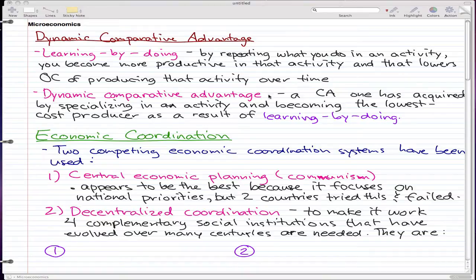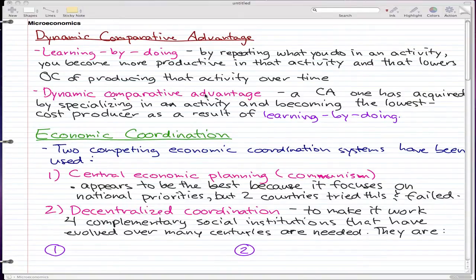Now, dynamic comparative advantage is a comparative advantage one has acquired by specializing in an activity and becoming the lowest cost producer as a result of learning by doing. In short, you're learning by doing, repetitively doing the same thing, specializing in that activity. Because you're specializing, sooner or later, you're going to produce this good at the lowest cost, making you the lowest cost producer because you've gone through the trial and errors and got better at it.